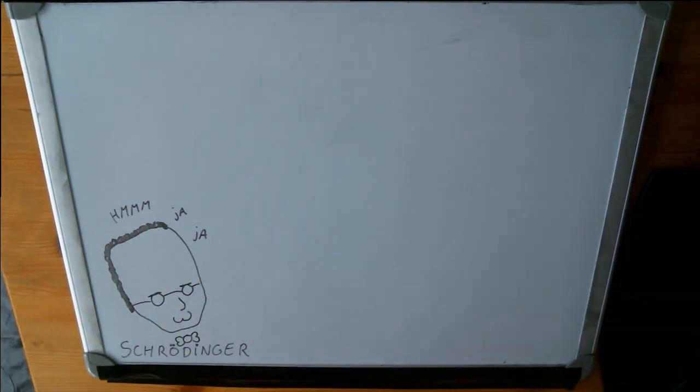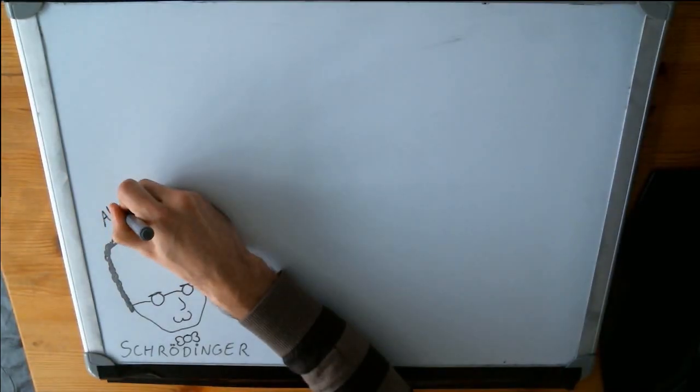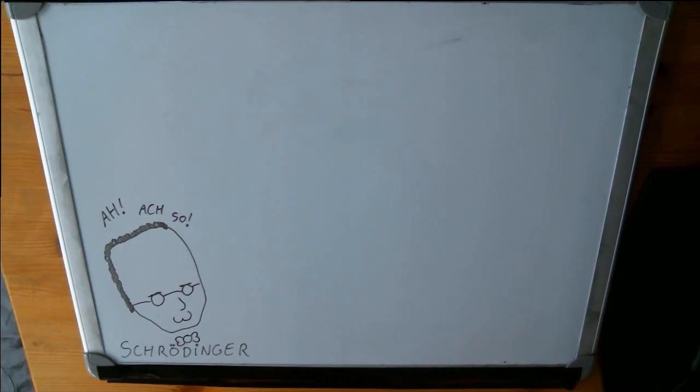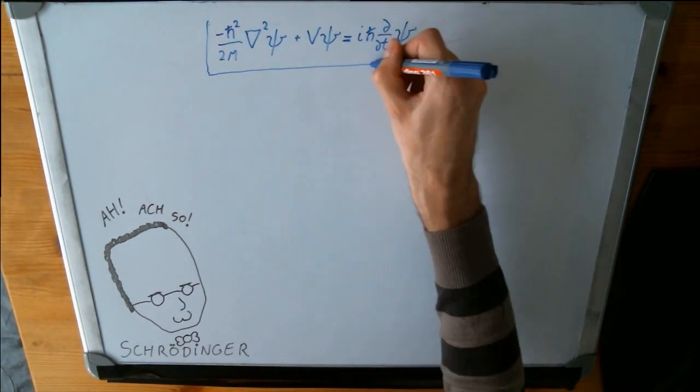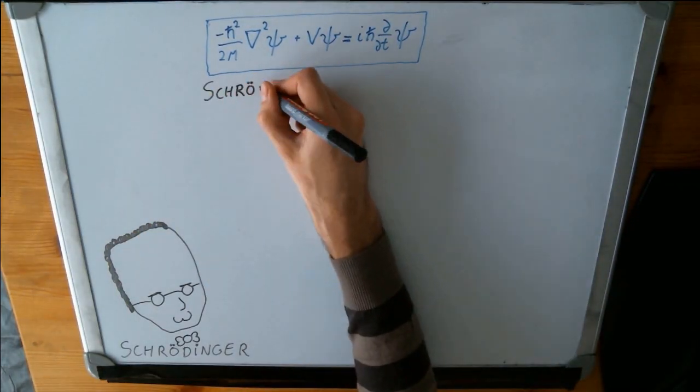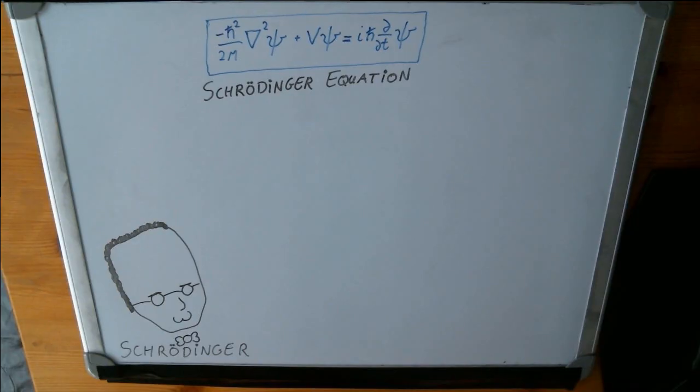He had looked at the experiments as well and found one common theme running through all of them. In his insight, he saw one law of nature, one equation that seemed to hold no matter what you did. He called it the wave equation. Nowadays, we simply know it as the Schrödinger equation because it was the rock solid core onto which all of quantum mechanics was built.